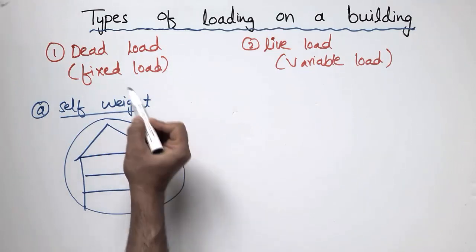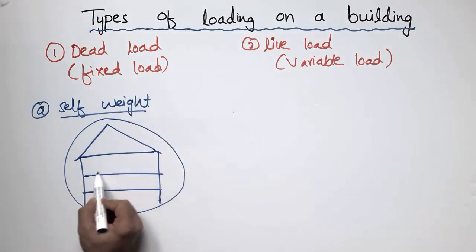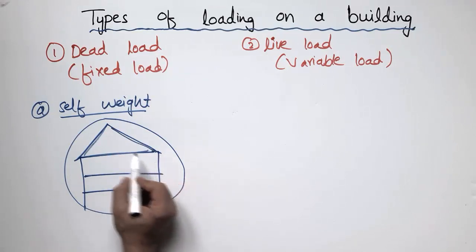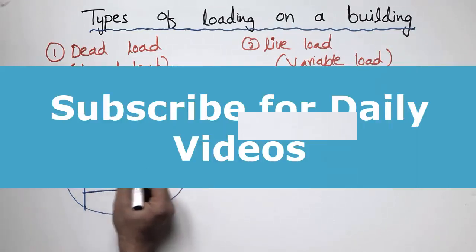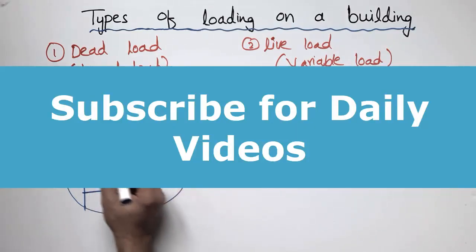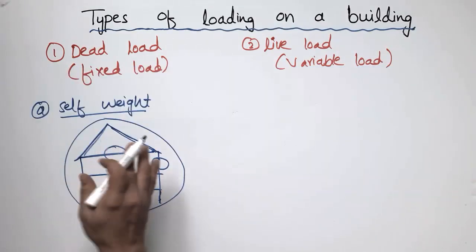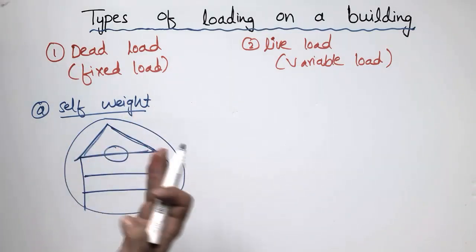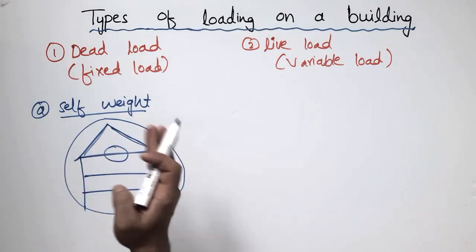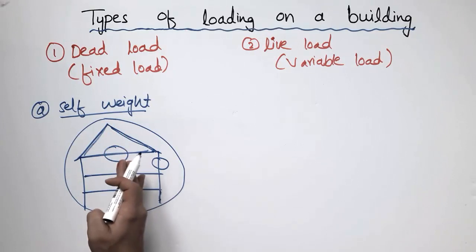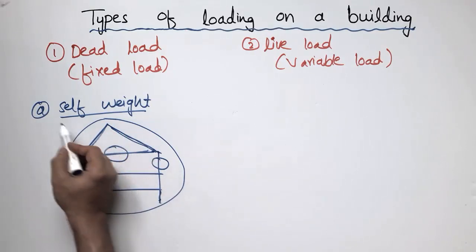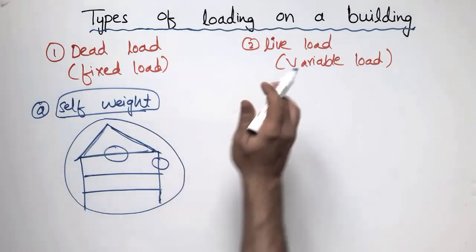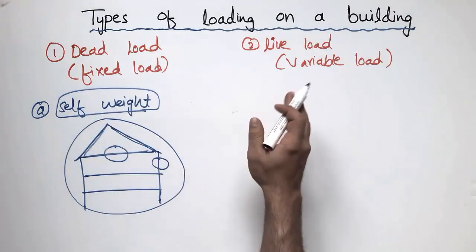The dead load has one subcategory called the self-weight, and the self-weight is actually the weight of the structural members — for example, the roof, the beams, and the columns. These are always considered in designing and cannot be changed. This is why it is called the fixed load, or the self-weight of the structure.